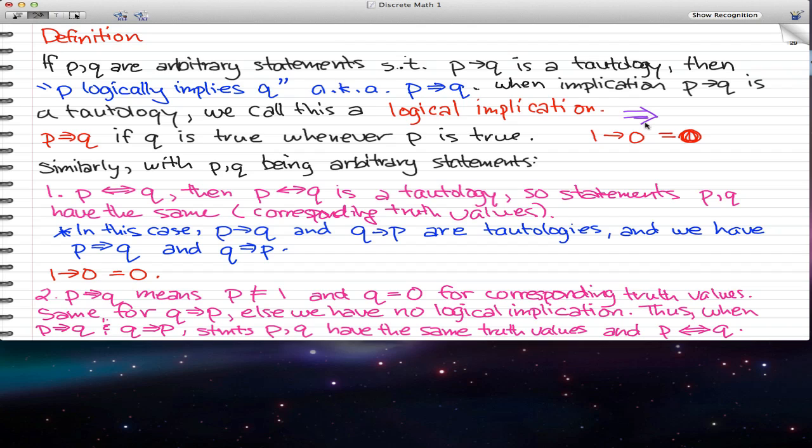Because tautology must be that every single component, every single truth value is a 1. And if we have 1 implies 0, well, that implication is false. So if Q is true, then P must be true. Because 1 implies 1, that's the only time when we get 1 implies 1 equals 1.